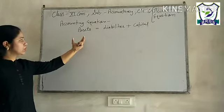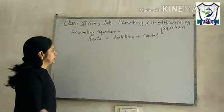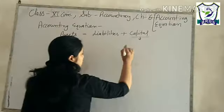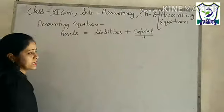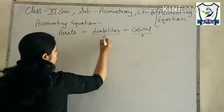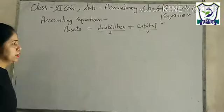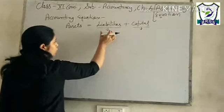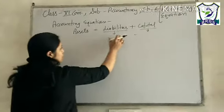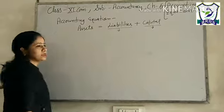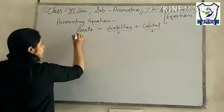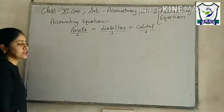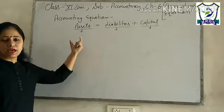I am repeating again. What is the meaning of accounting equation? Accounting equation means Assets equals total resources of a business. In business, the owner invests money — that is capital. If money is less, then the firm borrows from outsiders — that is known as liability. The total money any firm has comes from either capital or liability, and that total money is known as assets.